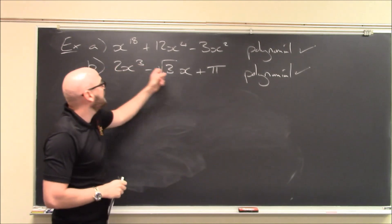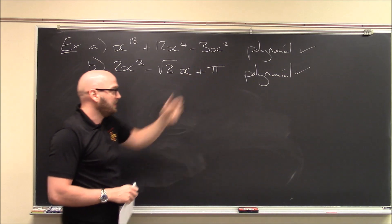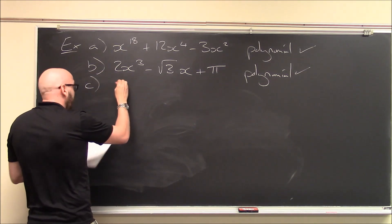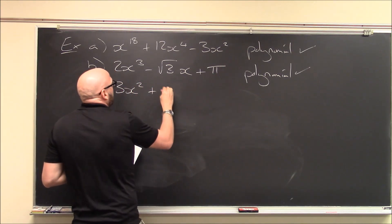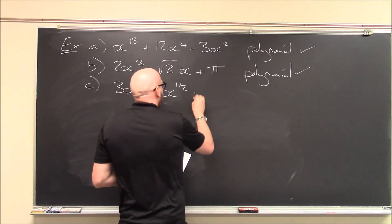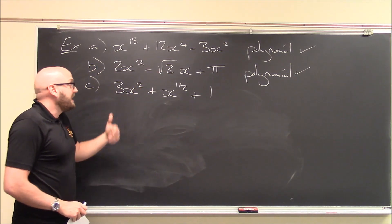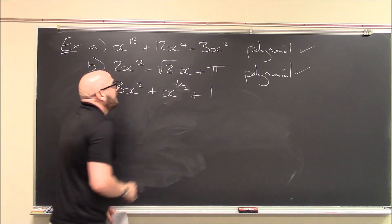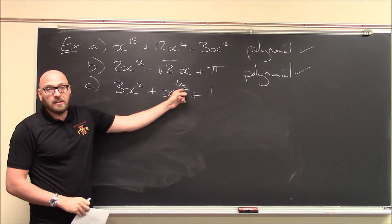So this is indeed a polynomial. All right, the exponent here is 3. I haven't written the exponent, but it's understood to be 1. And the exponent here, x to the 0 is 0. How about this guy? 3x squared plus x to the 1 half, which is often written as square root of x, plus 1. Well, it looks similar to everything we've been doing, but now it's not a polynomial. I don't really like this 1 half.